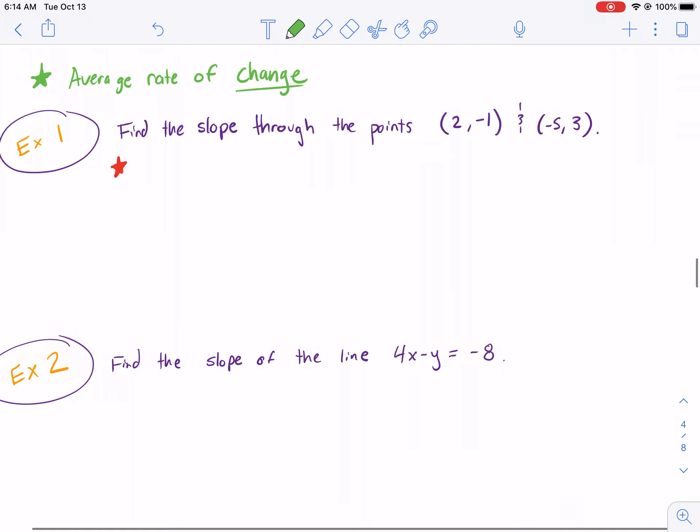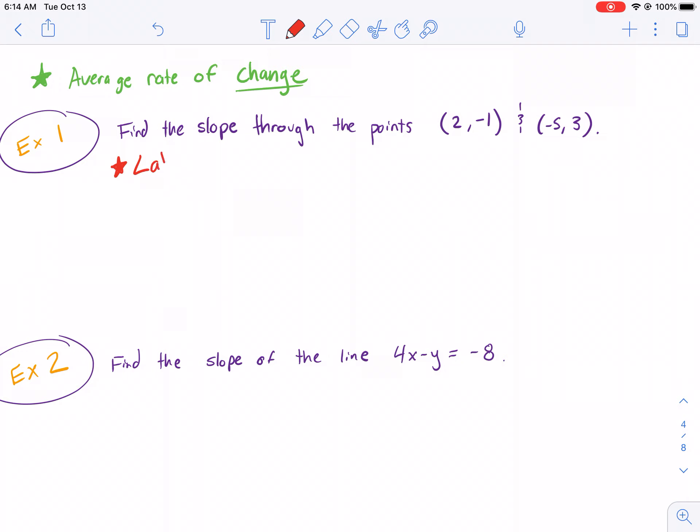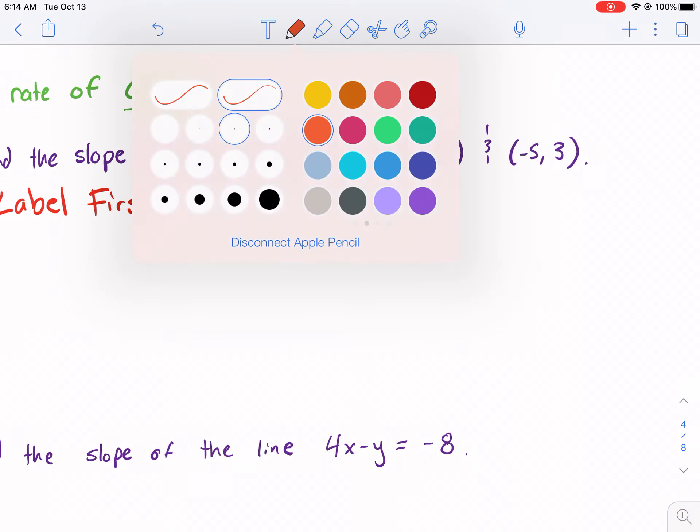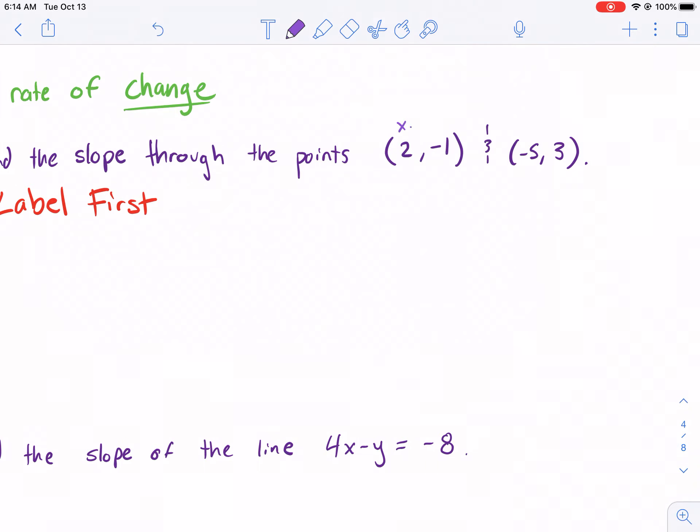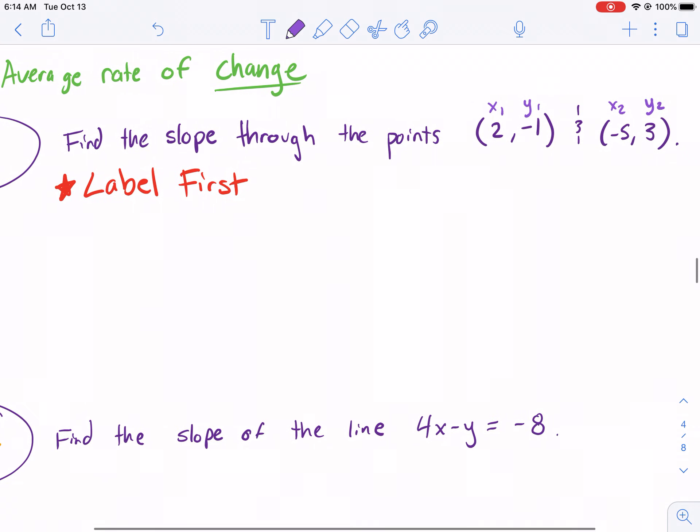Find the slope through the points (2, -1) and (-5, 3). Your first step is always going to be label first. That's your first step is labeling. What do I mean by labeling? Well, exactly how it sounds. We're going to label the points. So we label it X1, Y1. A common mistake I see is people labeling X1, X2. Don't do that, please. The X's and Y's need to go together. The 1's and the 2's need to go together. So, X1, Y1, X2, Y2.